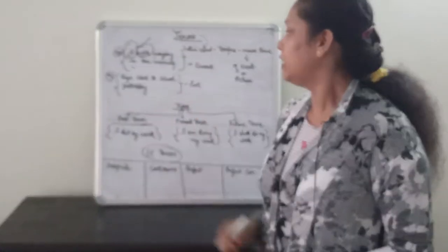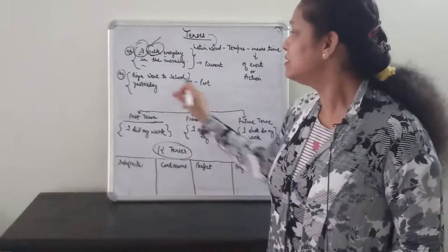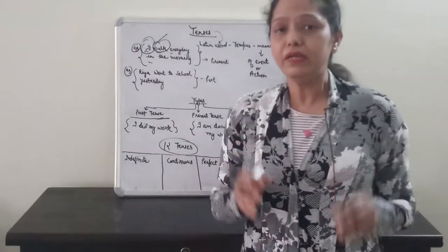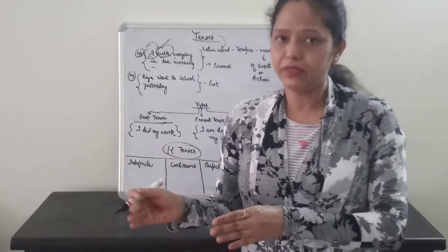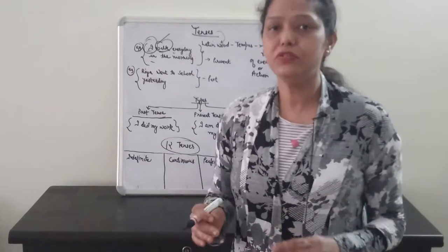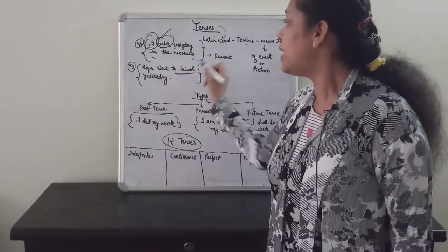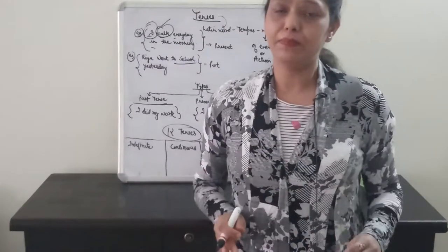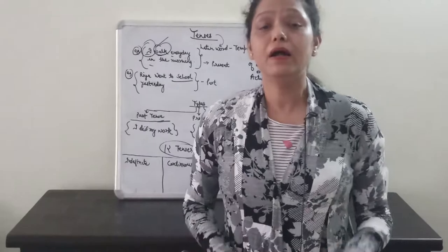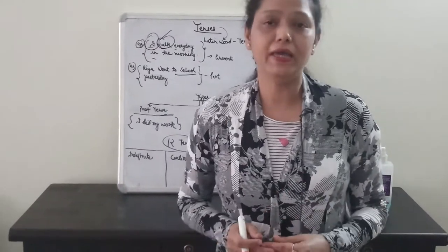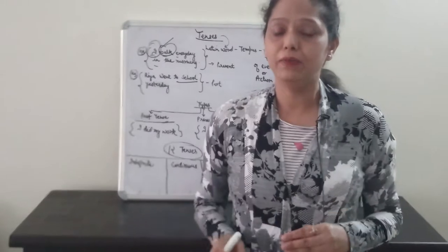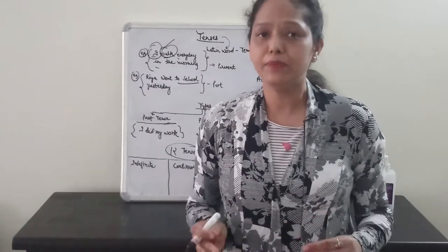In the similar way, we see another example: Rhea went to school yesterday. Rhea is taking an action and this action is actually taking place in past time. On the basis of these two examples, we can say that there are different dimensions of time and to indicate these different dimensions of time, we use different types of tenses.